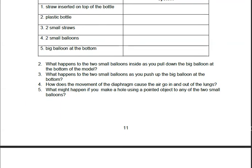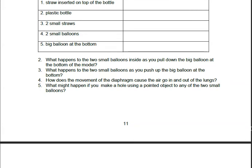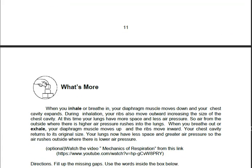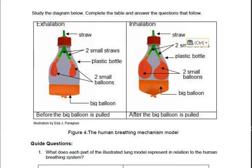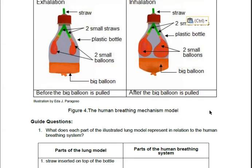Let us go directly to What I Have Learned. So here, you will look at the diagram — before the big balloon is pulled and after the big balloon is pulled. Basically, this represents our lungs and those are the other parts of the respiratory system. This is the human breathing mechanism model. I think when you were in grade 4, you've already done this.